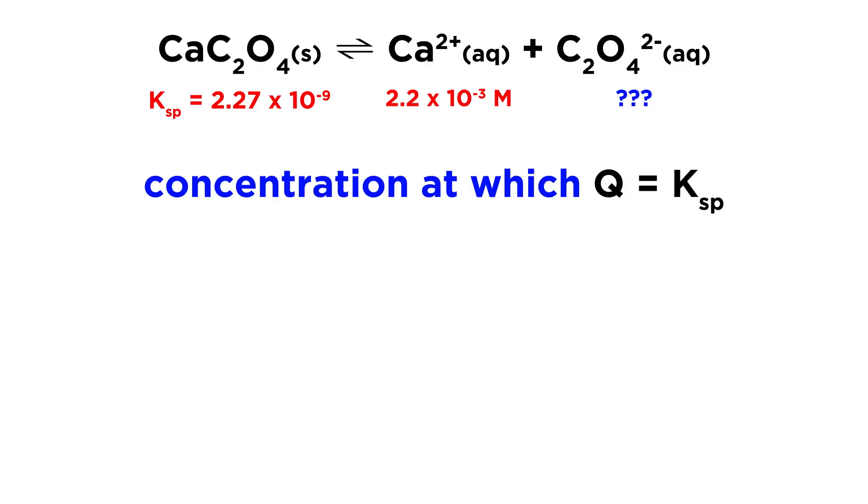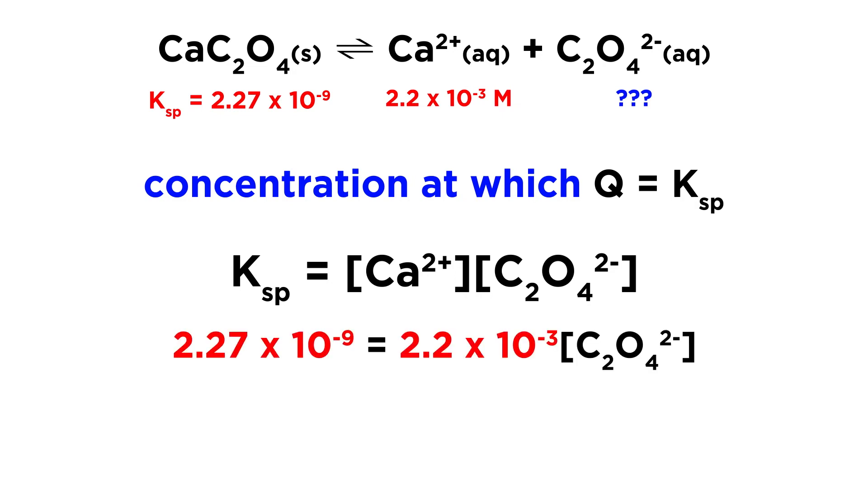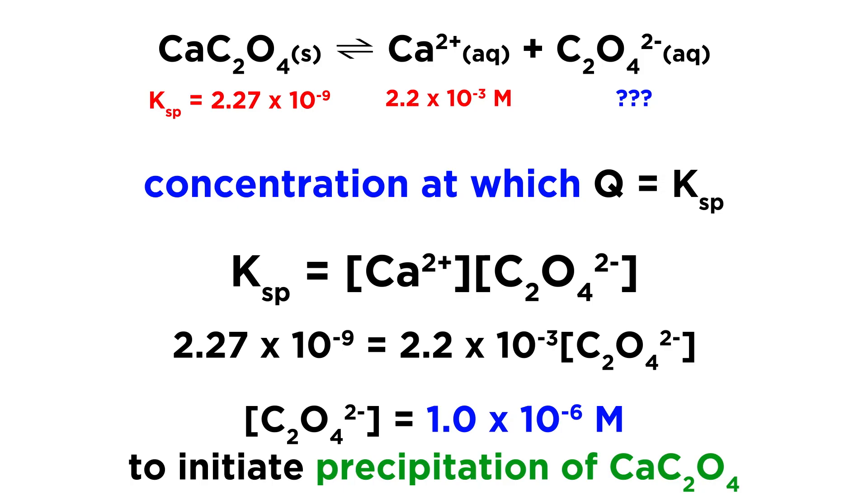Once again, precipitation occurs when Q equals Ksp, so we can simply write out the Ksp expression and plug in the two known values, that would be the Ksp itself and the calcium ion concentration. Solving for oxalate concentration, we get 1 times 10 to the negative 6 moles per liter, which is the necessary oxalate concentration to initiate precipitation of calcium oxalate.